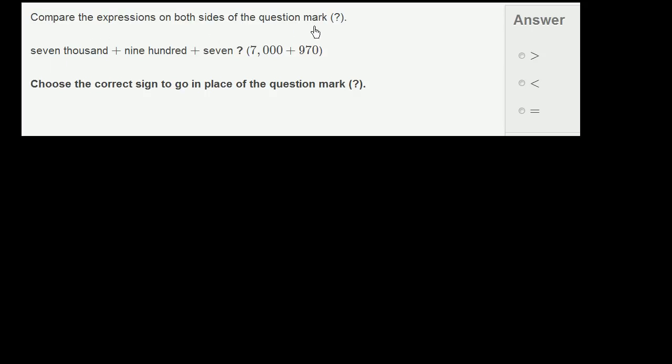Compare the expressions on both sides of the question mark. So on the left-hand side of the question mark, I have 7,907. So it's 7,000 plus 900 plus 7, which is going to be the same thing as 7,907.